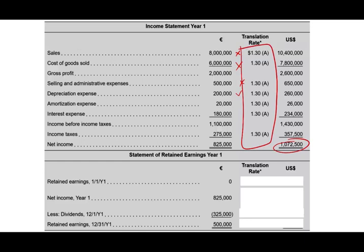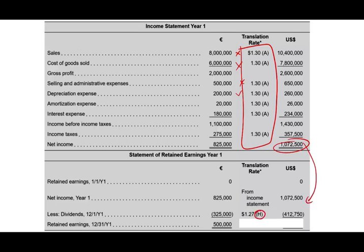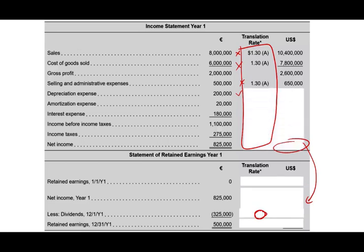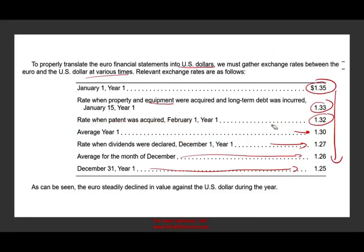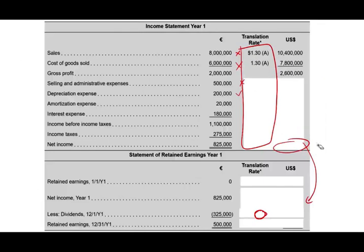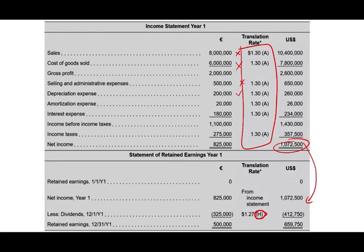Now let's move on to the statement of retained earnings. Beginning retained earnings is zero. Net income comes directly from above — no additional computation needed. For the dividend, we use the historical rate of $1.27, because that was the rate when the dividend was declared. This gives us ending retained earnings of 659,750 U.S. dollars. That ending retained earnings figure will carry over to the balance sheet.